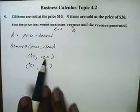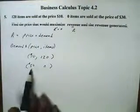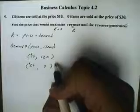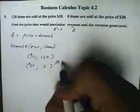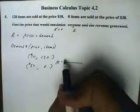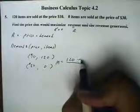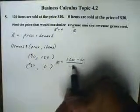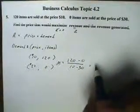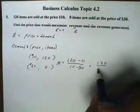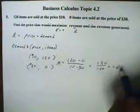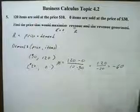Our points are: price $10 with 120 items sold, and price $30 with zero items sold. Let's find the slope of this function. That will be (120 minus 0) over (10 minus 30), which is 120 over negative 20, which gives a slope of negative 6.